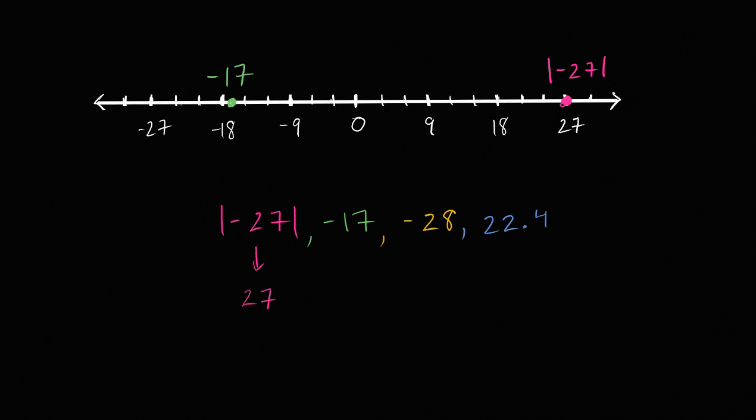And then we have negative 28. We have negative 27 and each hash mark is three. So negative 28 is going to be right over there.